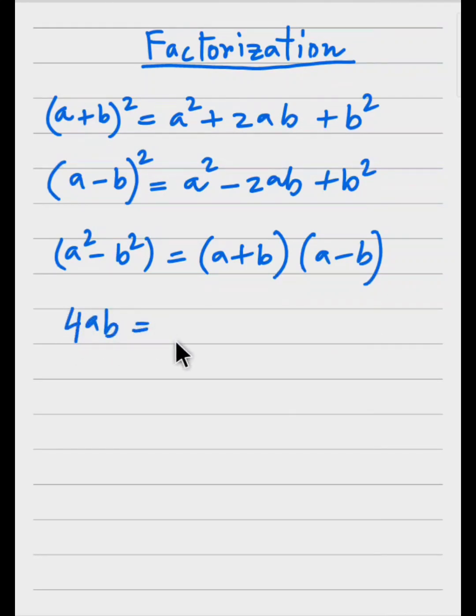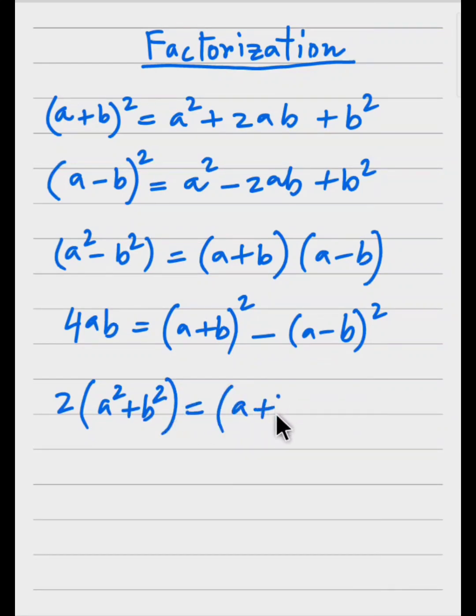(a+b)² minus (a-b)² equals 4ab. And (a+b)² plus (a-b)² equals 2 times (a² plus b²). All these formulas are coming in the work.